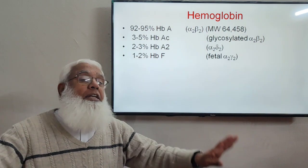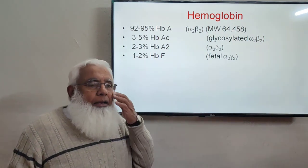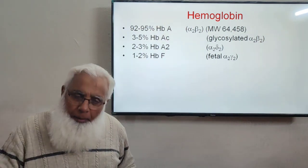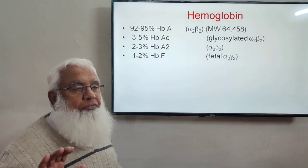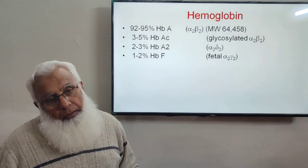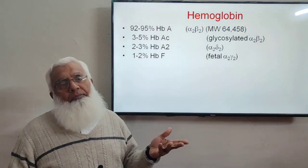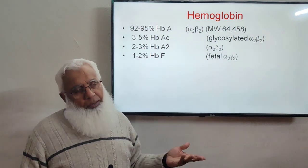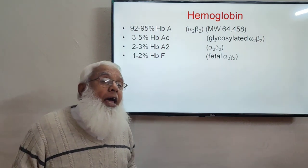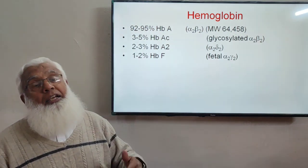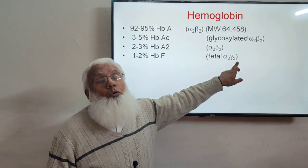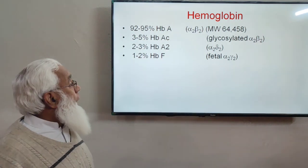Fetal hemoglobin is present during fetal life and is replaced by adult hemoglobin after birth. It consists of two alpha chains and two gamma chains instead of beta chains. Its properties differ from adult hemoglobin — we will discuss those properties later. The precise order of amino acids in the globin chains is critical for the structure and function of hemoglobin.